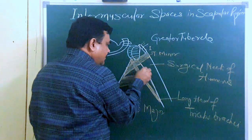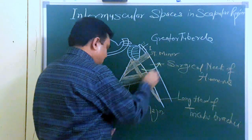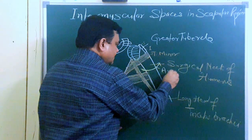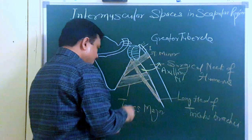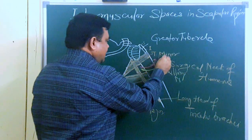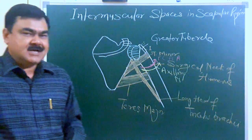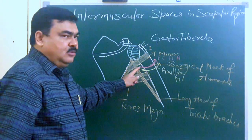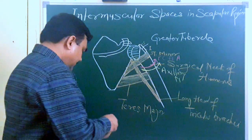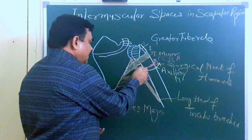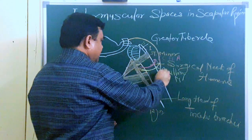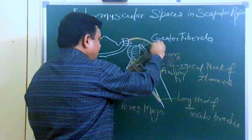The very important contents of the quadrangular space are the circumflex scapular artery and the axillary nerve. This is the axillary nerve, and here is the posterior circumflex humeral artery. The axillary nerve gives supply to the deltoid muscle and the teres minor muscle.